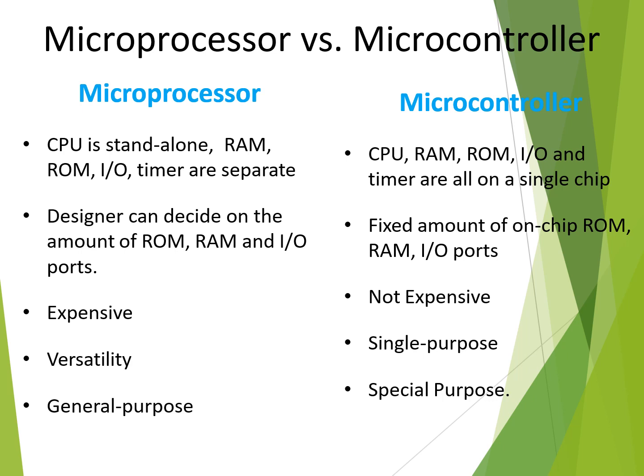In a microprocessor, the designer can decide the amount of RAM, ROM, and IO ports. Whereas in a microcontroller, since it has inbuilt RAM, ROM, and IO ports, the amount of on-chip ROM, RAM, and IO ports is fixed. Cost-wise, a microprocessor is expensive as all components are connected externally, while a microcontroller is not expensive because all components are within a single chip. A microprocessor is versatile — it has the ability to alter its function — whereas a microcontroller is intended for a single, special purpose.